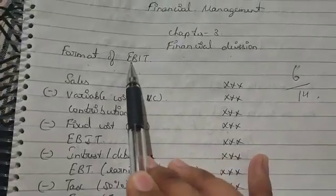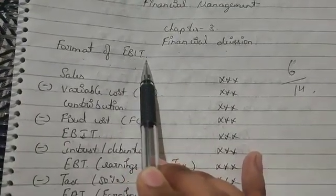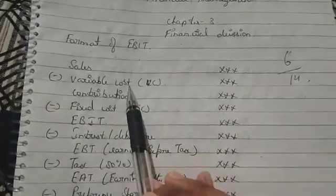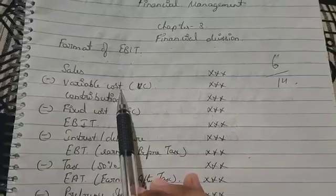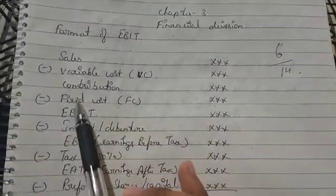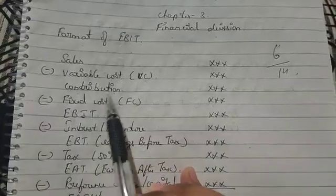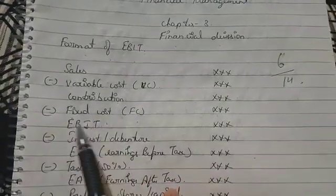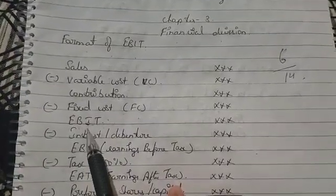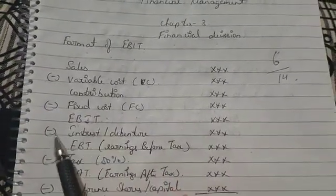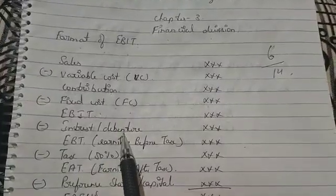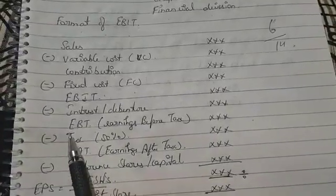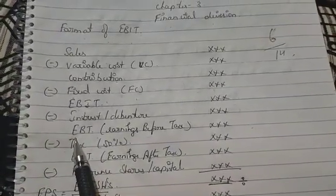Format of EBIT: EBIT means Earnings Before Interest and Tax. Sales amount minus Variable Cost (VC) gives Contribution. Then subtract Fixed Cost (FC) to get EBIT - Earnings Before Interest and Tax. Then we deduct Interest or Debenture, so that after deduction what we get is